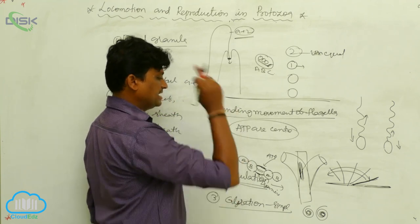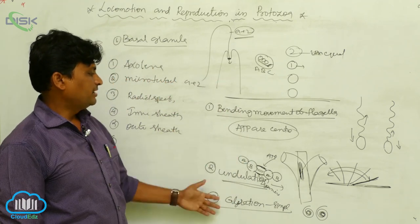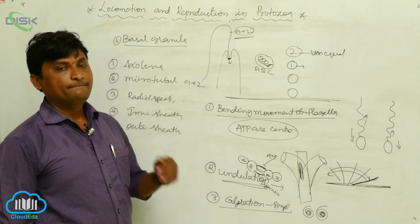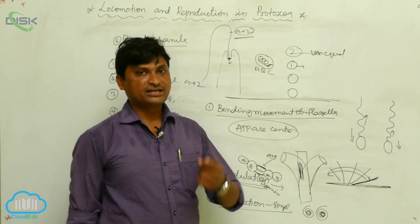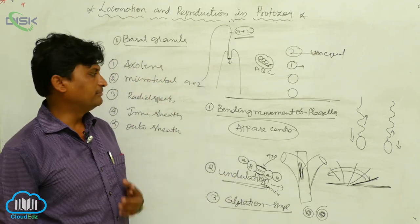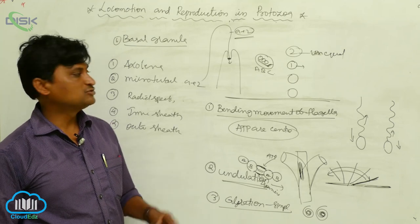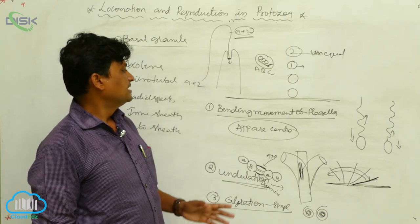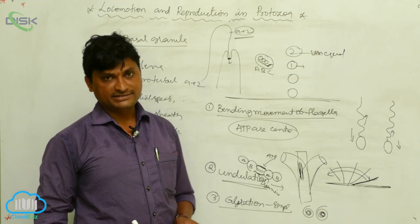These three types of movements are performed by the flagella. Additionally, flagella consist of small mastigonemes and flimmers present on the flagella. Based on the presence of flimmers and mastigonemes, flagella are divided into five types.